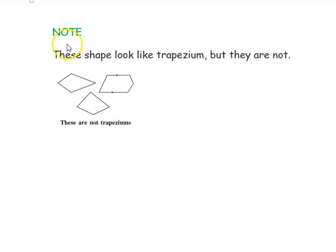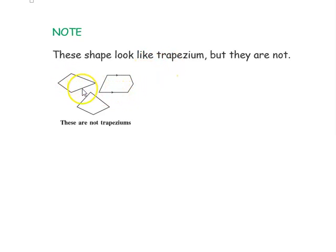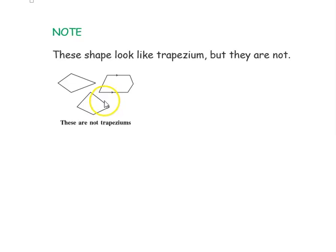Important note: some shapes look like a trapezium but are not. Even though they have four sides and may appear to have two parallel lines, they are not actually parallel. These shapes are very important to remember — they look like a trapezium but are not trapezium.